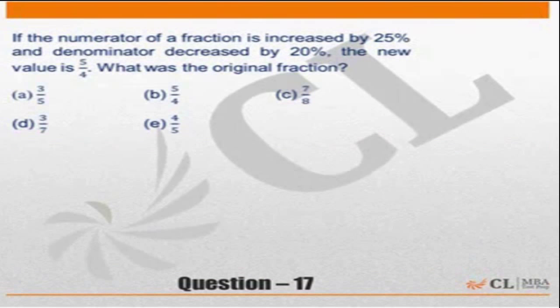The numerator of a fraction is increased by 25% and the denominator is increased by 20%. The new value is 5 by 4. What is the original value?